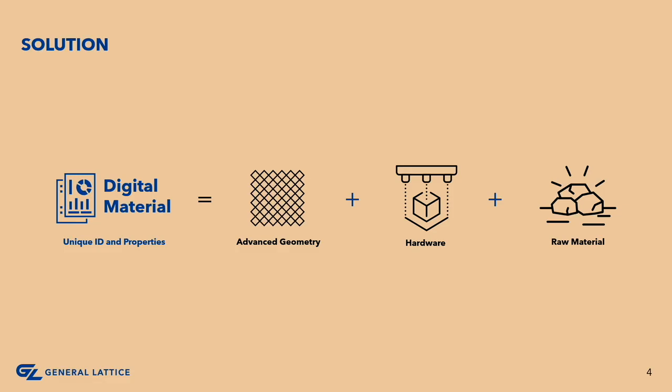So how can we get ahead of this? That brings us to the concept of digital materials. General Lattice defines a digital material as a unique ID with physical properties made up of three main elements: advanced geometry, hardware, and a raw material. The overall goal of a digital material is to simplify and streamline the process of identifying your appropriate lattice for your application.